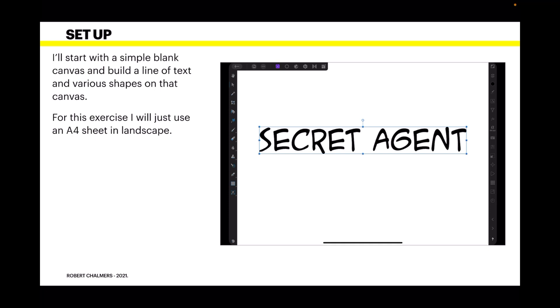Now the setup, I'm using a simple blank canvas here and build a line of text and various shapes on that canvas. For this exercise I'll just use an A4 sheet in landscape mode and I've got the word secret agent across it.